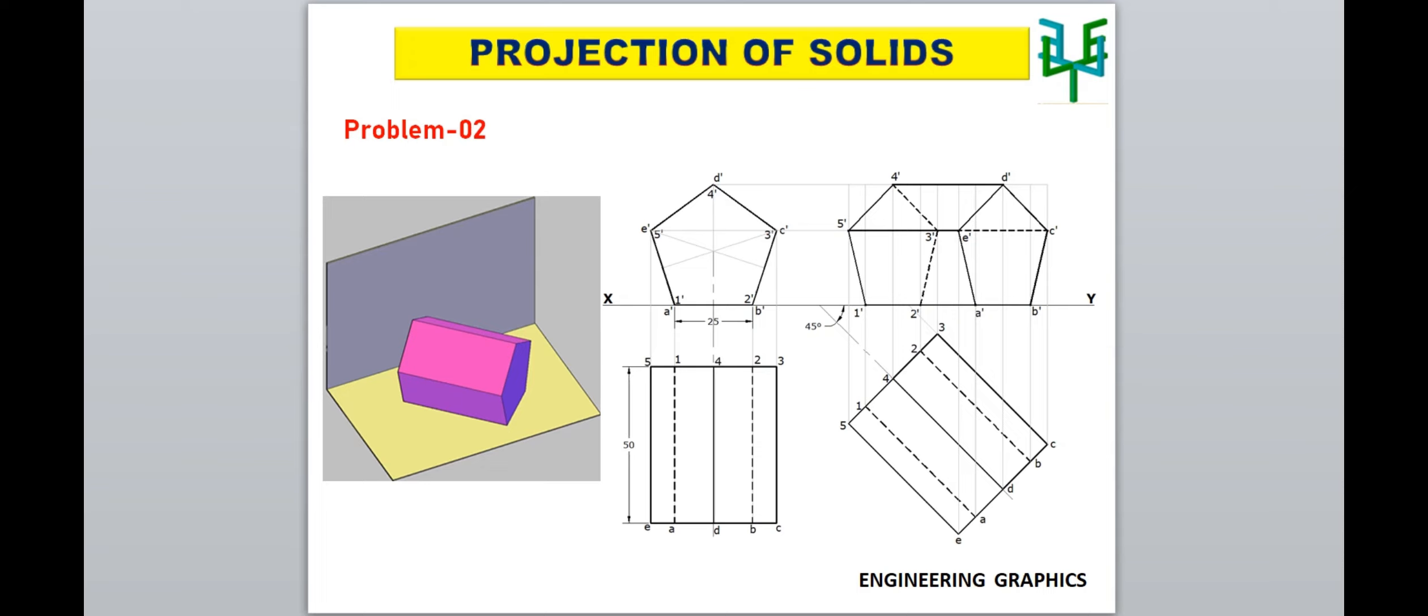In this video, we are going to discuss projections of a pentagonal prism with the condition axis inclined to VP and parallel to HP.